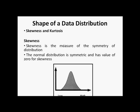Skewness is the measure of the symmetry of a distribution. It defines how data points are distributed on both sides of the mean. As we see in this figure, if this is the center of the data distribution, then how many data points fall to the left of it and how many fall to the right. A perfectly normal distribution is symmetric and has a skewness value of zero.